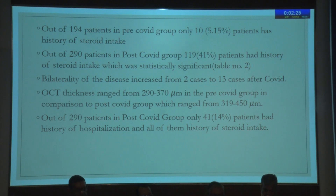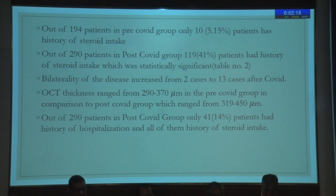In the post-COVID group, 119 patients — that is 41% — had a history of steroid intake, which was statistically significant. Bilaterality of disease increased from 2 to 13 cases in the post-COVID group. OCT thickness ranged from 290 to 370 microns in the pre-COVID group, compared to 319 to 450 microns in the post-COVID group.